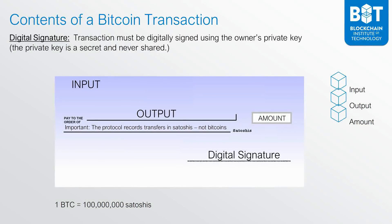Finally, the entire transaction needs to be signed using the owner's private key. This is the cryptography element, and the whole process of digitally signing a transaction is handled by the owner's wallet. The owner never has to reveal their private key to anybody.